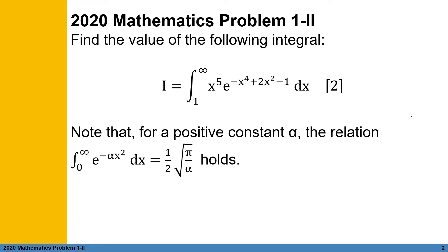Let us call this equation 2. Note that for a positive constant alpha, the relation of the integral of exponential of negative alpha x squared dx from 0 to infinity equals one half of the square root of pi over alpha holds. We are given this clue, which we can use later in the simplification of similar terms in the integral.